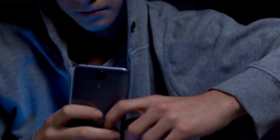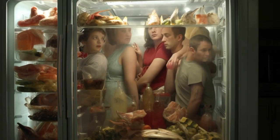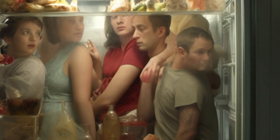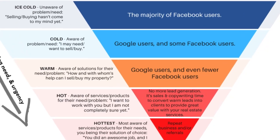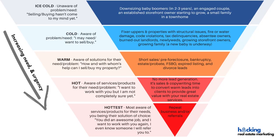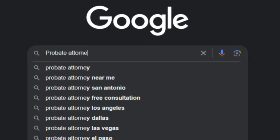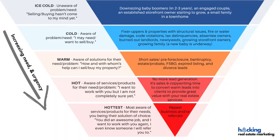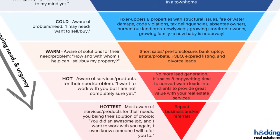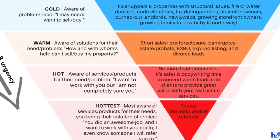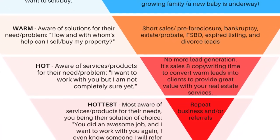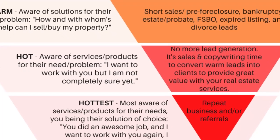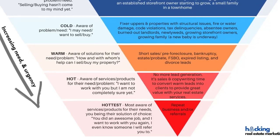Next, we have the cold prospect — they are aware of a problem or need. They may actually think for the first time in many years: 'Oh, I may need to sell my house.' That's more of a Google user than a Facebook user. Then we get into warmer territory — these prospects are aware of a solution to their problem. They think: 'With whose help can I sell or buy a property?' These are often Google users and in fewer cases Facebook users. Then it gets hot — we enter the territory of service or product awareness. The prospect thinks: 'I want to work with you, but I'm not completely sure yet.' You've now left lead generation and entered the realm of sales.